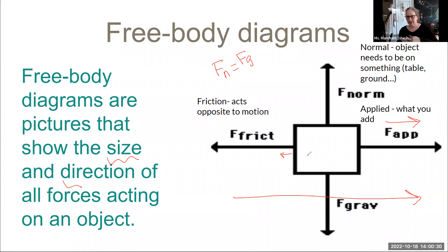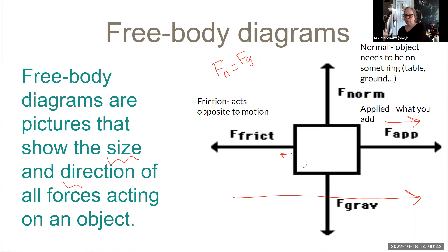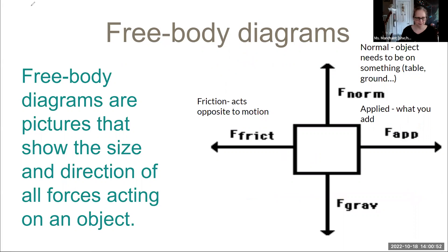If gravity was more, it'd go through the ground. If gravity was less, it would float up. We know that they are equal in that y direction. And then in the x direction, wherever you're accelerating, that is the direction of the force. You could have a force applied going to the east or the west. So when you're doing your drawings, double check that you're doing the correct size and correct direction.